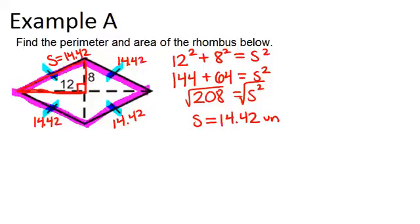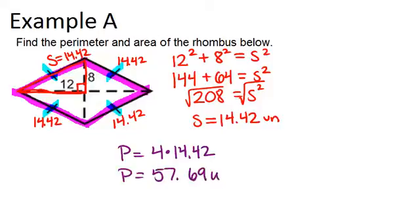Since all four of the sides are the same, we can just do 4 times 14.42, which is the same thing as if we were to add up 14.42 plus 14.42 plus 14.42 plus 14.42. That gives us about 57.69 units.